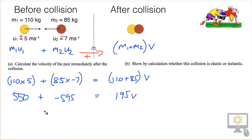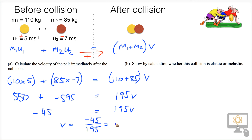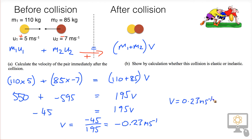Adding the two momenta together, we get a total momentum before the collision of 45 kilogram meters per second, which equals 195 times V. Solving for V: V equals 45 divided by 195, giving minus 0.23 meters per second. The minus sign means they are moving to the left — equivalent to a speed of 0.23 meters per second to the left. That's the first part of the problem solved.